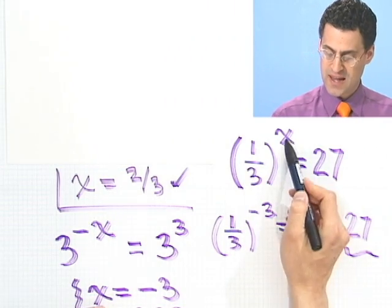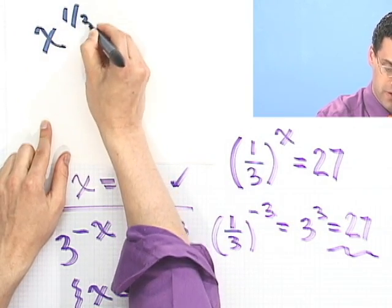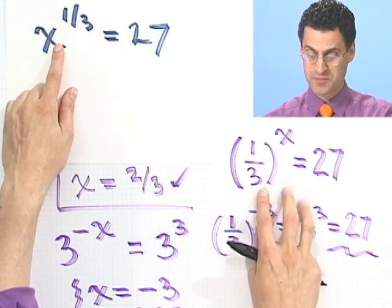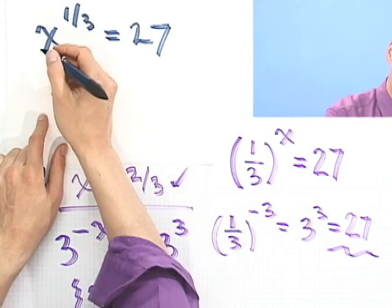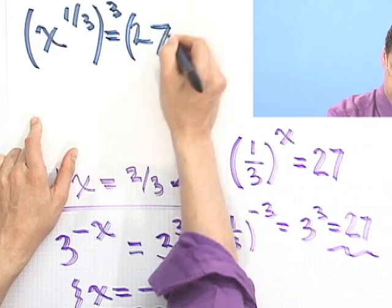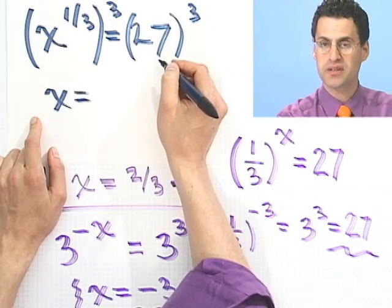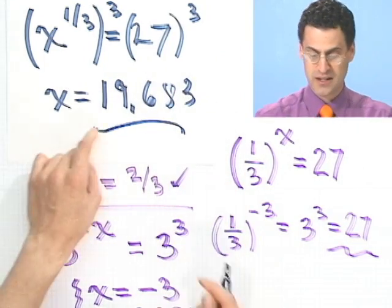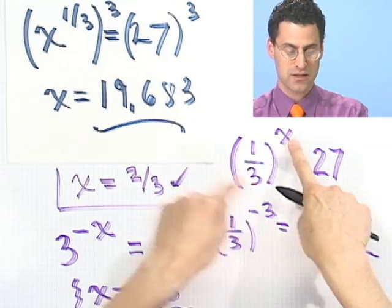Here we looked at 1 third to the x equals 27. What if I flip the roles here? x to the 1 third equals 27. This would not be, I would not consider this an exponential equation because the unknown is now actually a variable. But I just want to show you the difference between saying 1 third to the x versus x to the 1 third. What's the answer here? Well, here I would just cube both sides. And if I cube x to the 1 third, I just get x. And if you cube 27, 27 times 27 times 27, that's right. You know what it is. It's 19,683. So here x equals 19,683. Here x equals negative 3. There's a big difference between 1 third to the x and x to the 1 third. Be careful. See you soon.